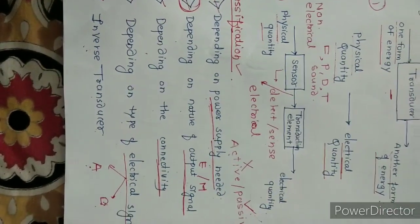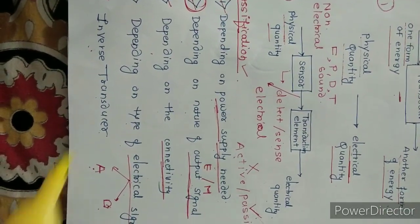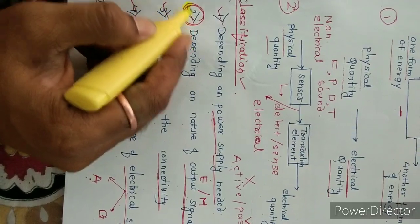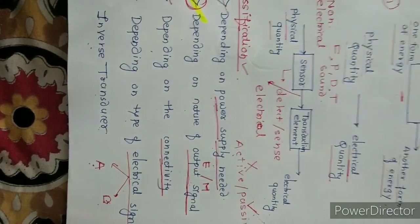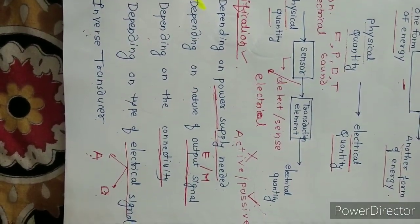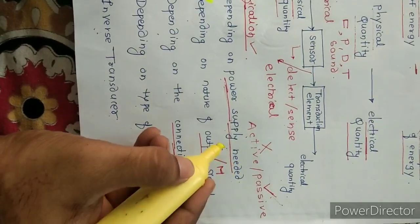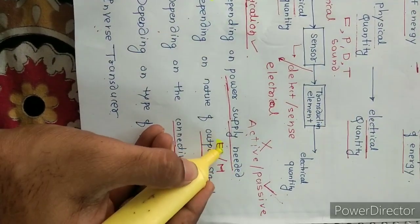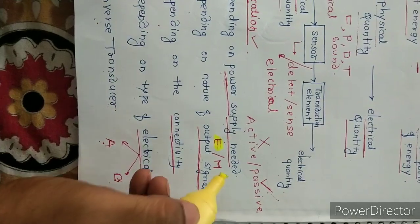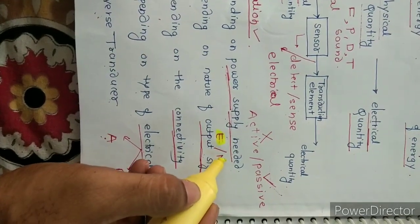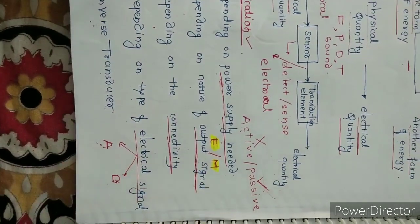Welcome students. In the last lecture, we covered the classification of transducers depending on the output signal. If the output signal is an electrical signal, then it is called an electrical transducer. If the output is a mechanical or physical quantity, it is called a mechanical transducer.